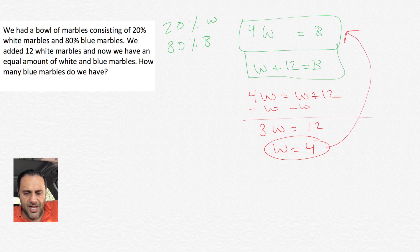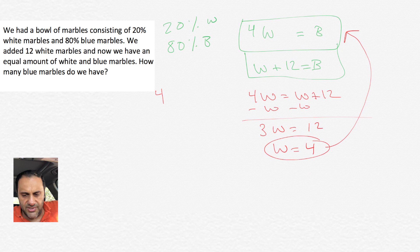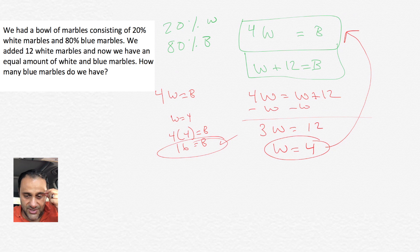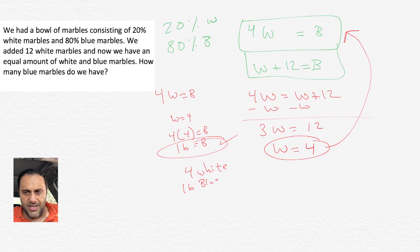Now let's just check our work. If we had 4 white marbles and then we added 12, then we'd have 16 white marbles, and that's perfect because we have 16 blue marbles. So that was just us checking our work there. The trick there was that little ratio deal in the beginning.